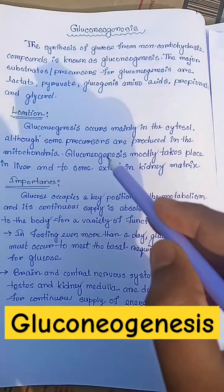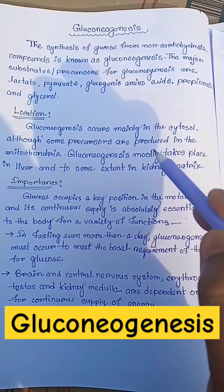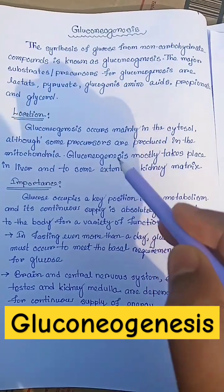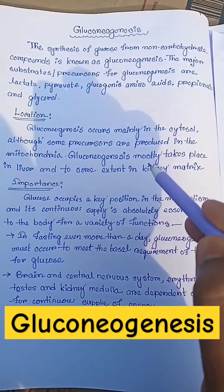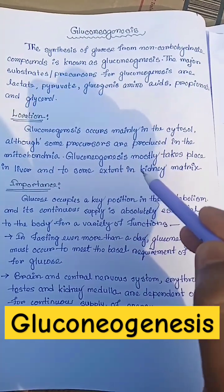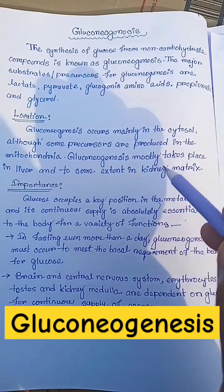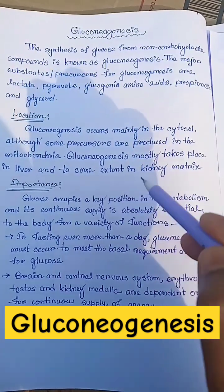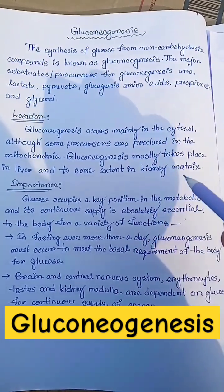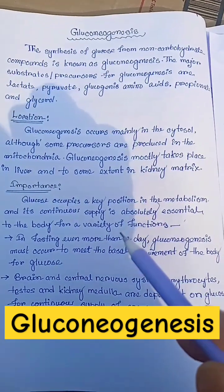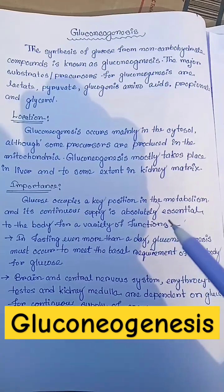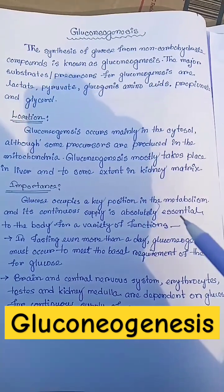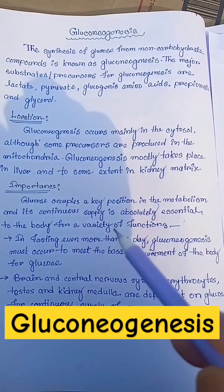Gluconeogenesis occurs mainly in the cytosol, although some precursors are produced in the mitochondria. It mostly takes place in the liver and to some extent in the kidney cortex.